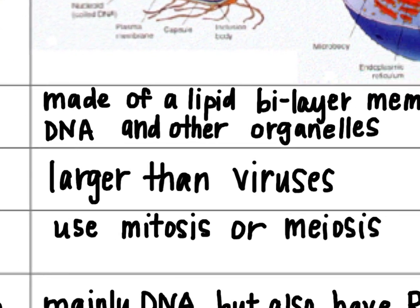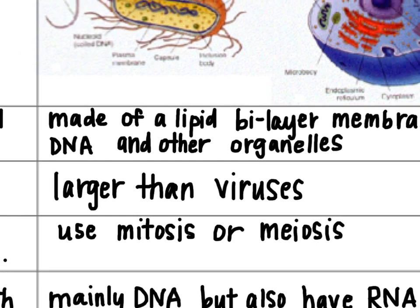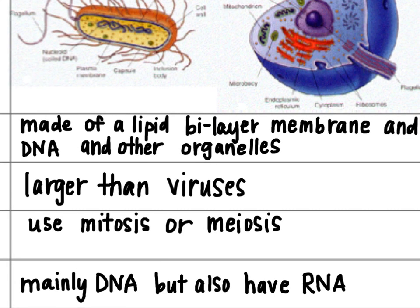Inside of a cell, the outside is made of a lipid bilayer that makes up the cell membrane. They might have a cell wall as well, depending on what kind of cell it is. There's DNA inside of the cell — sometimes that's inside of a nucleus, sometimes it's not. There are also other organelles inside of the cell, things like ribosomes, and if it's an animal or plant cell, things like mitochondria or chloroplasts.